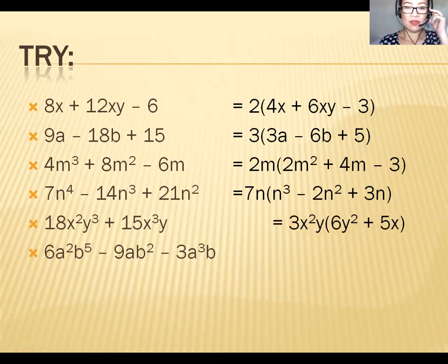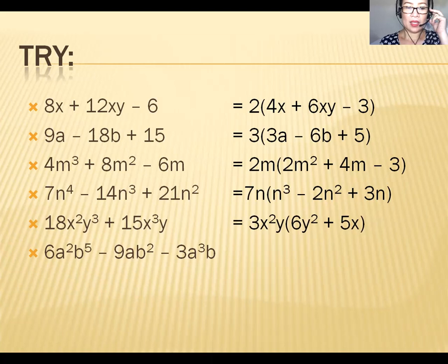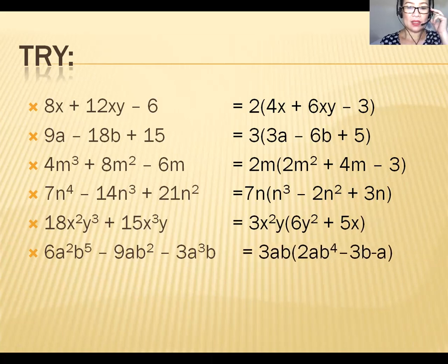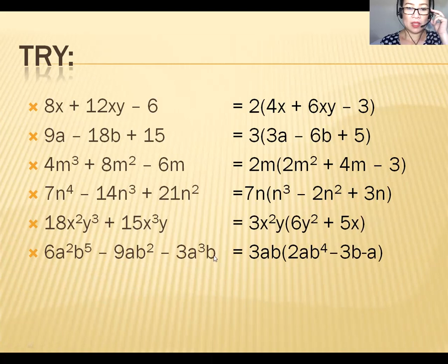Number five: 18 and 15 — the GCF is 3. x² is the lower exponent term and y is the lower term for y, so you get the factored form. Number six: for 6, 9, and 3, the GCF is 3. For the variable a, the lowest term is a, and for variable b, the lowest term is b. So the monomial GCF is 3ab.